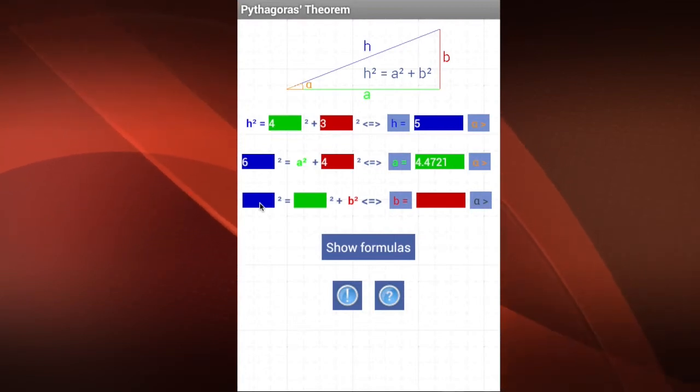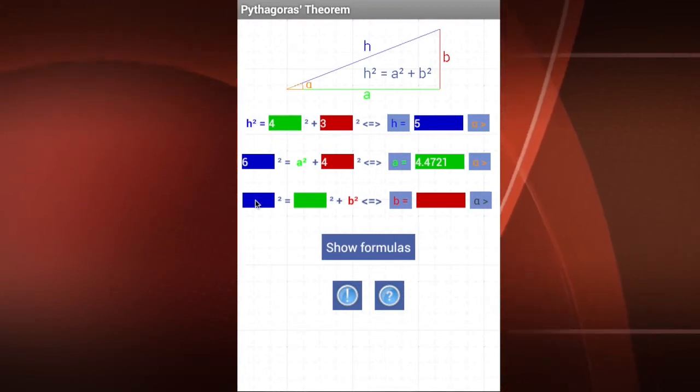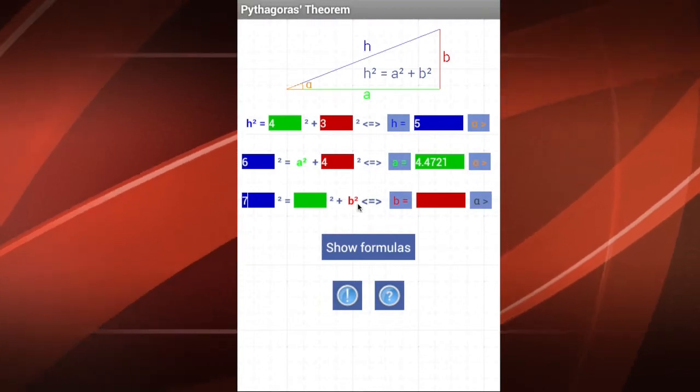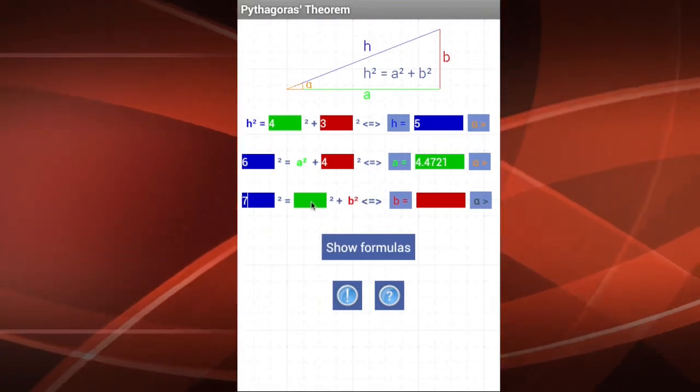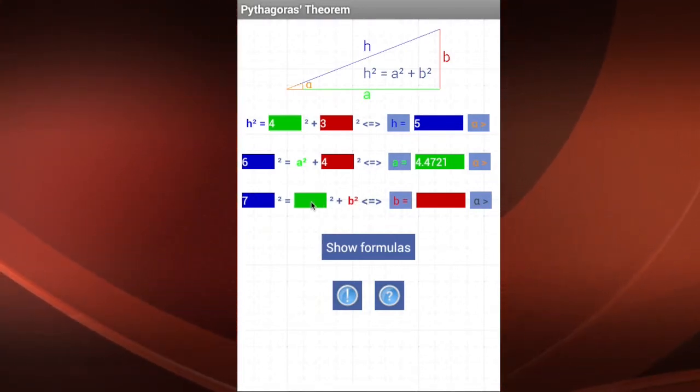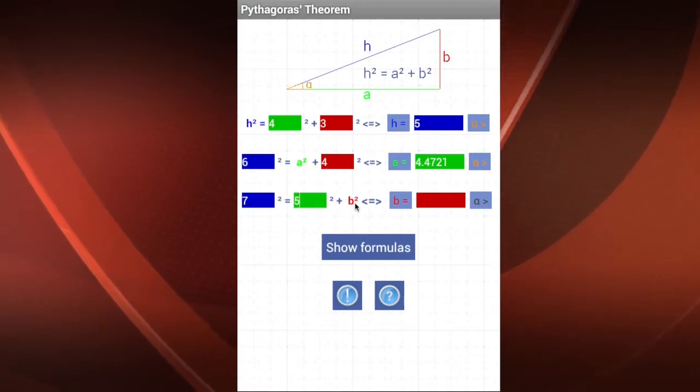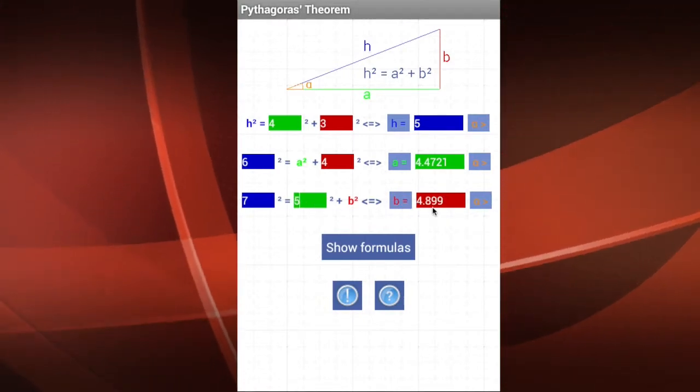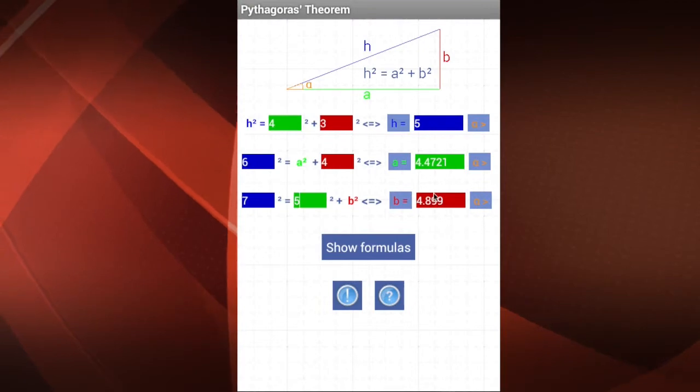Now, if I have the hypotenuse of value 7, I want to determine the side B. So let's say that the side A is 5. I click here, and I get the value of B. Pretty easy.